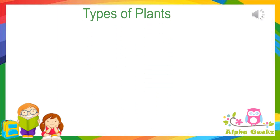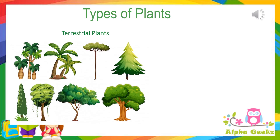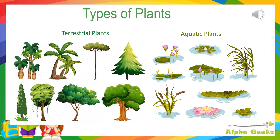Types of plants. There are two types of plants, terrestrial plants and aquatic plants. Terrestrial plants are plants that grow on land. Aquatic plants are plants that grow in water.